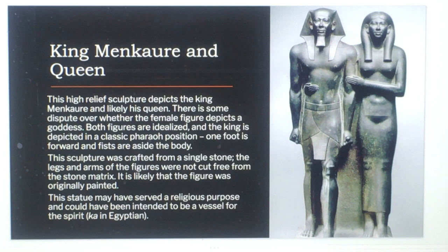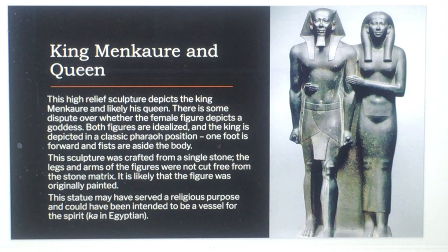Both figures are idealized and the king is depicted in a classic pharaoh position — one foot is forward and the fists are at the sides of the body. This sculpture was crafted from a single stone; the legs and arms of the figures were not cut free from the stone matrix. The figure was likely originally painted, and this statue may have served a religious purpose and could have been intended to be a vessel for the spirit.